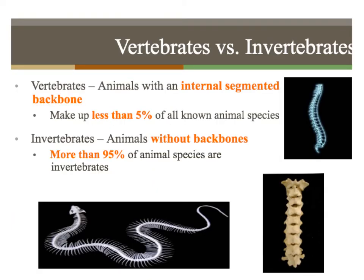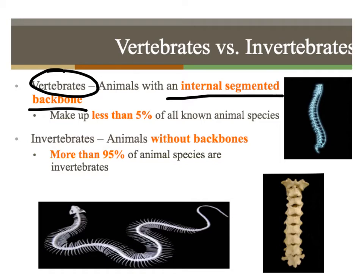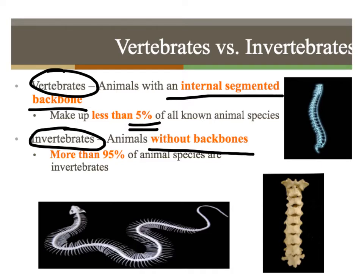One of the first ways we can start to categorize animals into different groups is to determine whether or not they have a backbone. Animals with a backbone are called vertebrates, and animals without backbones are called invertebrates. Animals with a backbone make up less than 5%, and more than 95% of animal species are invertebrates.